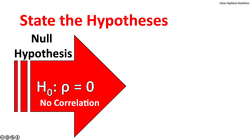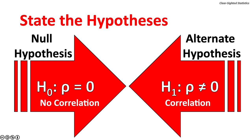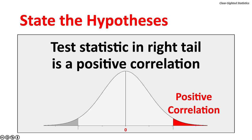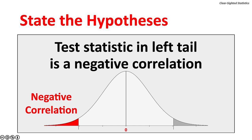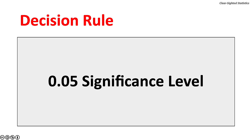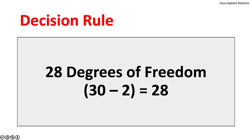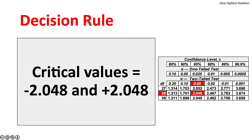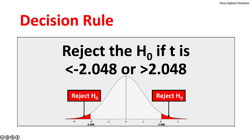State the null hypothesis: rho equals zero — there is not a correlation in the population. The alternate hypothesis: rho does not equal zero — there is a correlation in the population. If the test statistic is in the right tail, there is a positive correlation; if in the left tail, a negative correlation. Select a significance level of 0.05. Degrees of freedom equals n minus 2, giving 28 degrees of freedom. The critical values for t are negative 2.048 and positive 2.048. Decision rule: reject the null hypothesis if t is less than negative 2.048 or greater than positive 2.048.